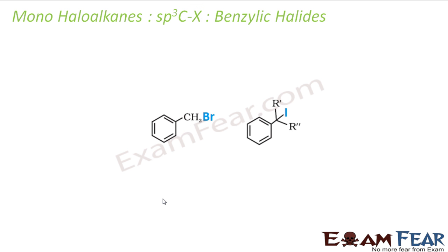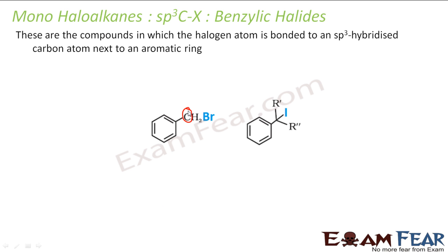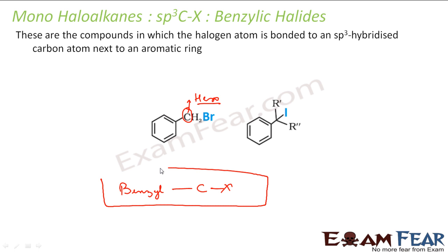The next type is benzylic halide. In this case, the hero carbon — the one linked to the halogen — is attached to a benzyl group. So the format is: benzyl group — carbon — X (halogen). This carbon is called the benzylic carbon because it is directly attached to a benzene ring.